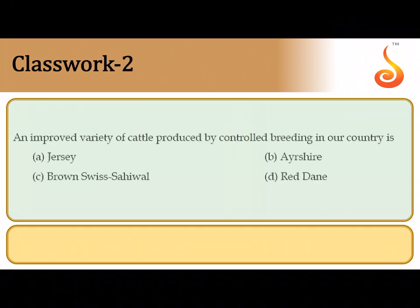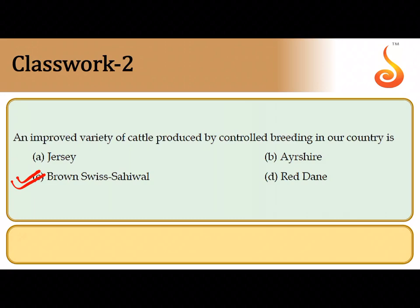An improved variety of cattle produced by controlled breeding is obtained by crossing an indigenous variety with an exotic one. For example, Brown Swiss is exotic to our country and is crossed with Sahiwal, which is indigenous, in order to obtain an improved variety of cattle.